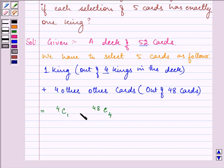On applying the multiplication principle, we have 4 factorial divided by 1 factorial multiplied by 3 factorial, multiplied by 48 factorial divided by 4 factorial times 48 minus 4 factorial.